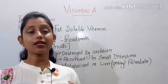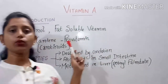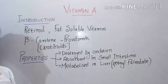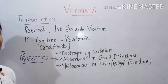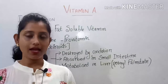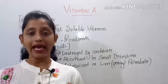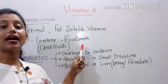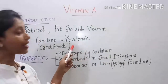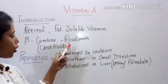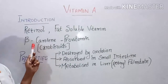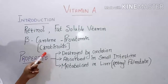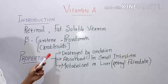Vitamin A is the first among the fat-soluble vitamins. It is mainly available in animal fats. It is also available in plants, but in plants it is available as a pro-vitamin — not in the correct vitamin form. This pro-vitamin is known as beta carotene, or carotenoids.